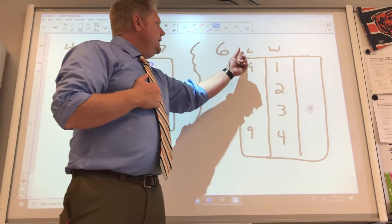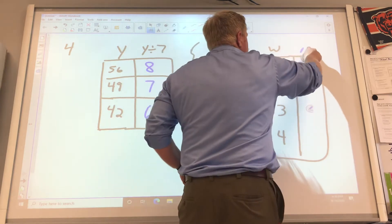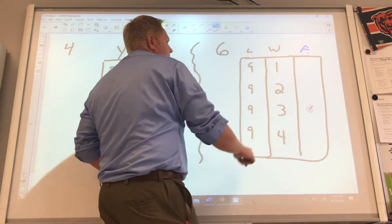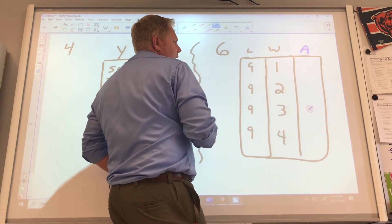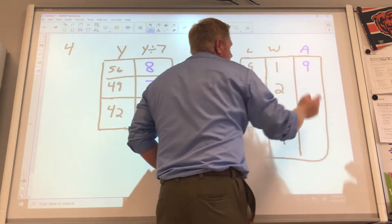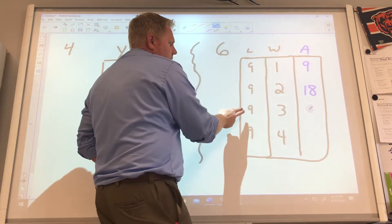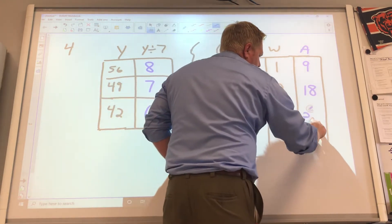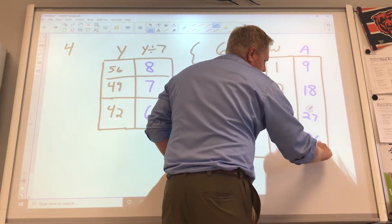They said length times width equals area. So they've given you the length is always 9. The area changes. So a 9 by 1 rectangle is 9 times 1, it's 9 squared. 9 times 2, it's 18. 9 times 3, we got our 27. And 9 times 4 is our 36.